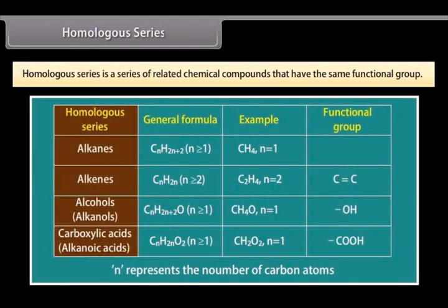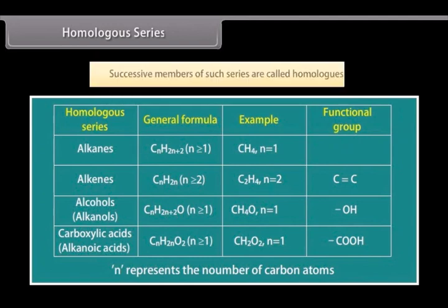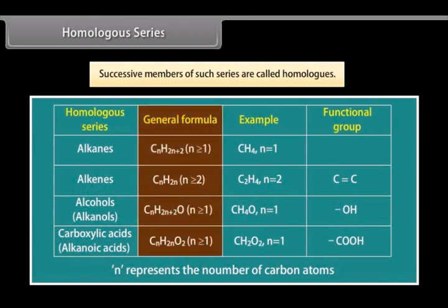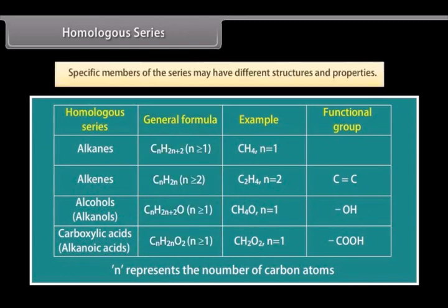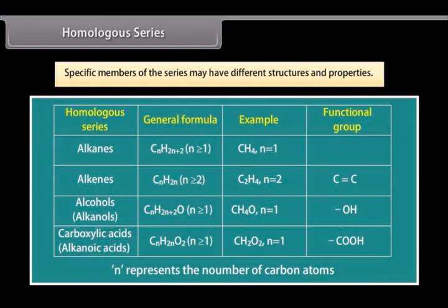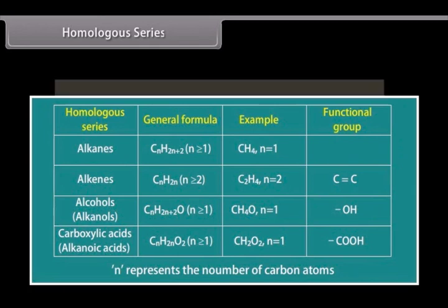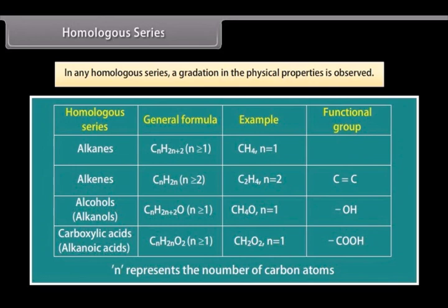Homologous series. Homologous series is a series of related chemical compounds that have the same functional group. These differ in formula by a fixed group of atoms. The successive members of such series are called homologs. Even though the general formula remains constant in a homologous series, specific members of the series may have different structures and properties. However, the reactivity usually remains the same. In any homologous series, a gradation in the physical properties is observed. This gradation occurs due to the increase in the melting points and boiling points along with increasing molecular mass of the compound.